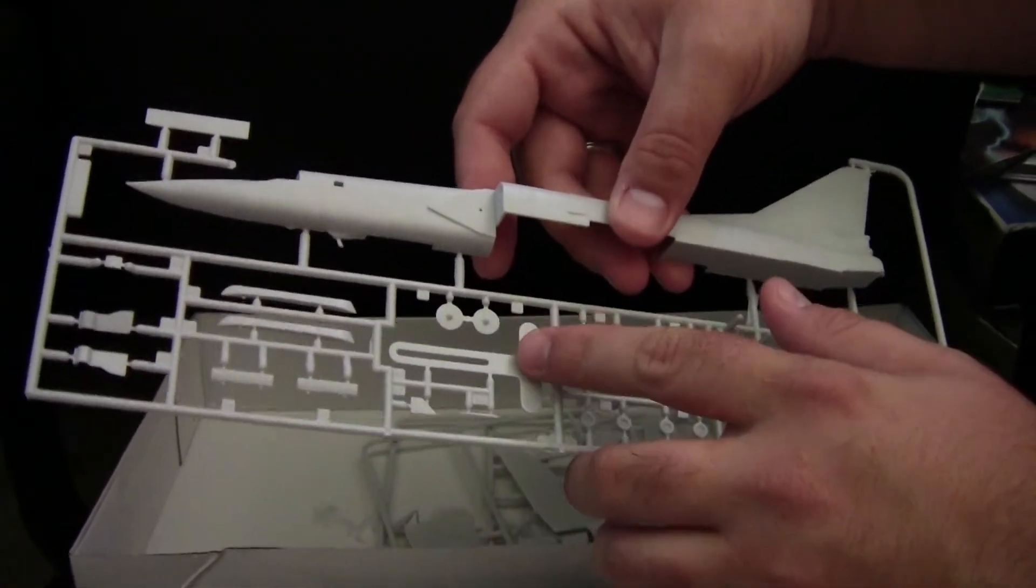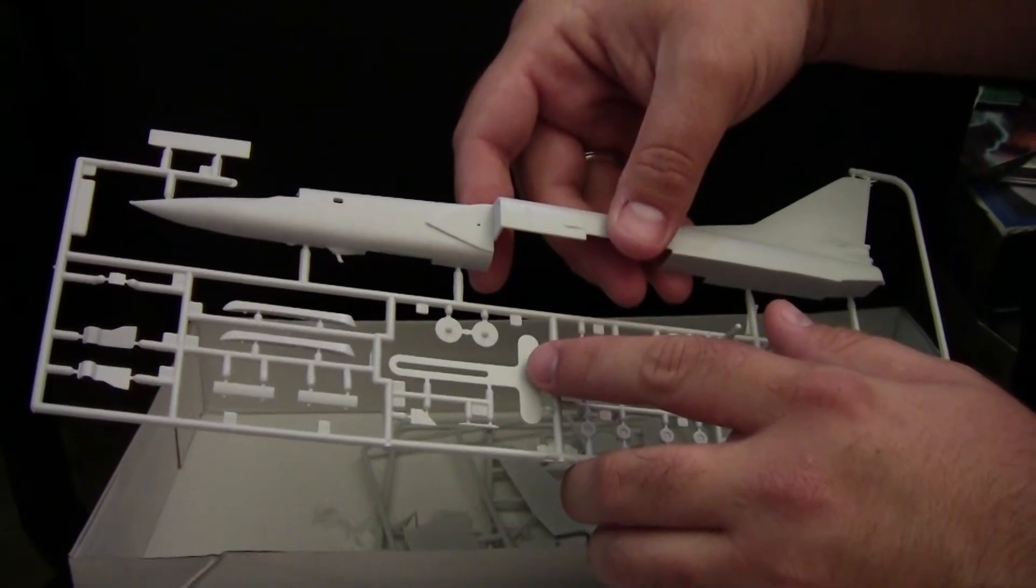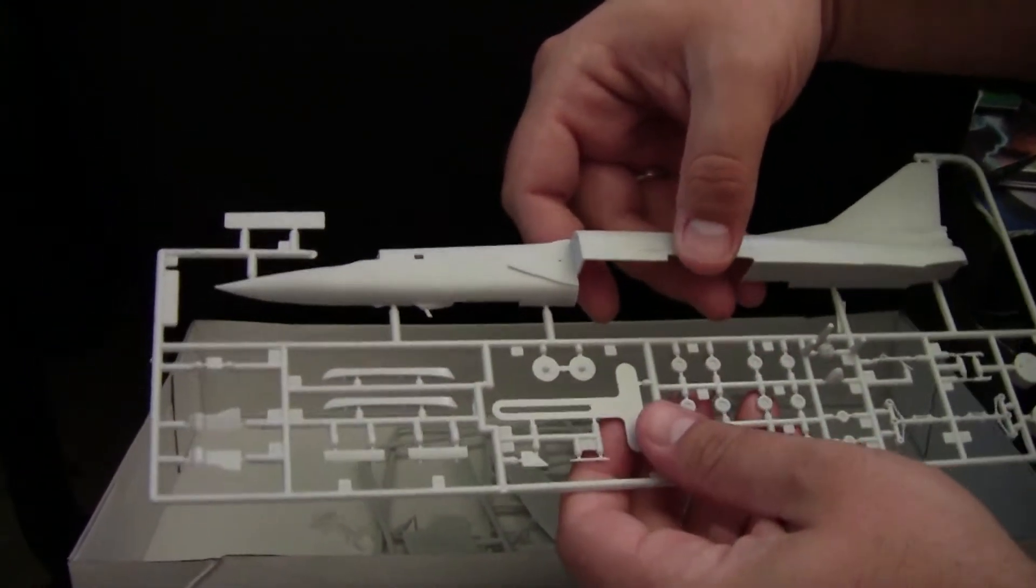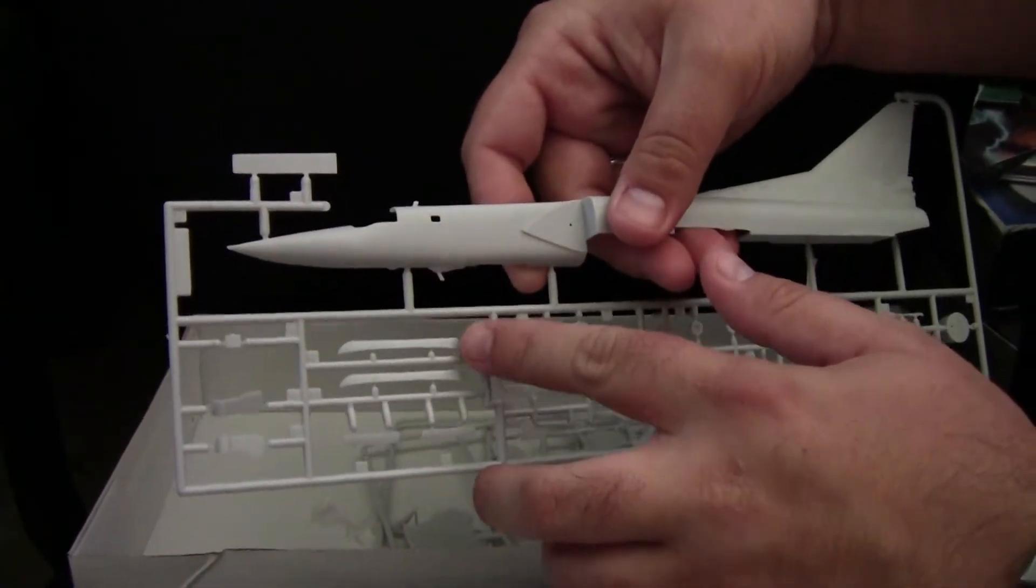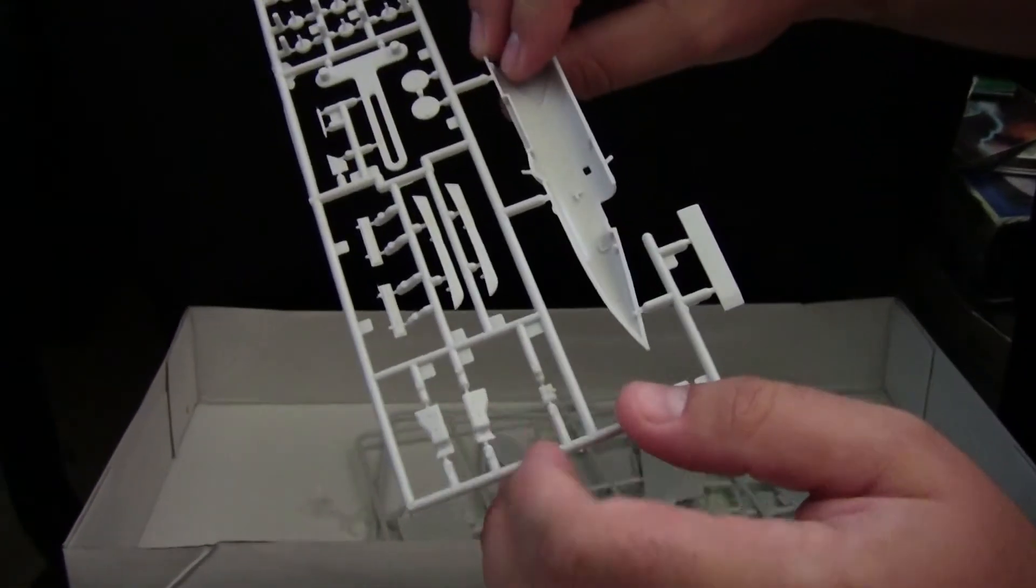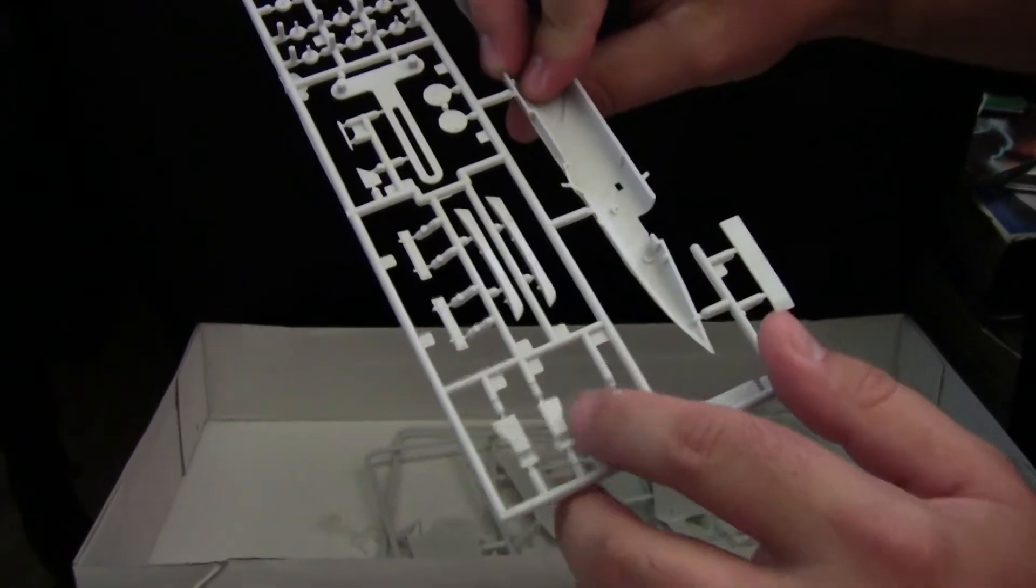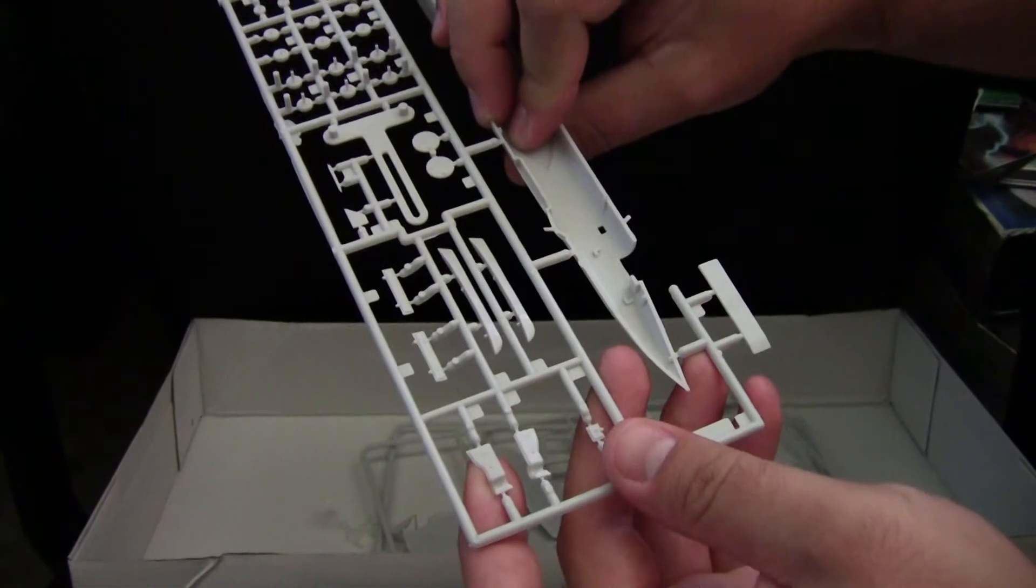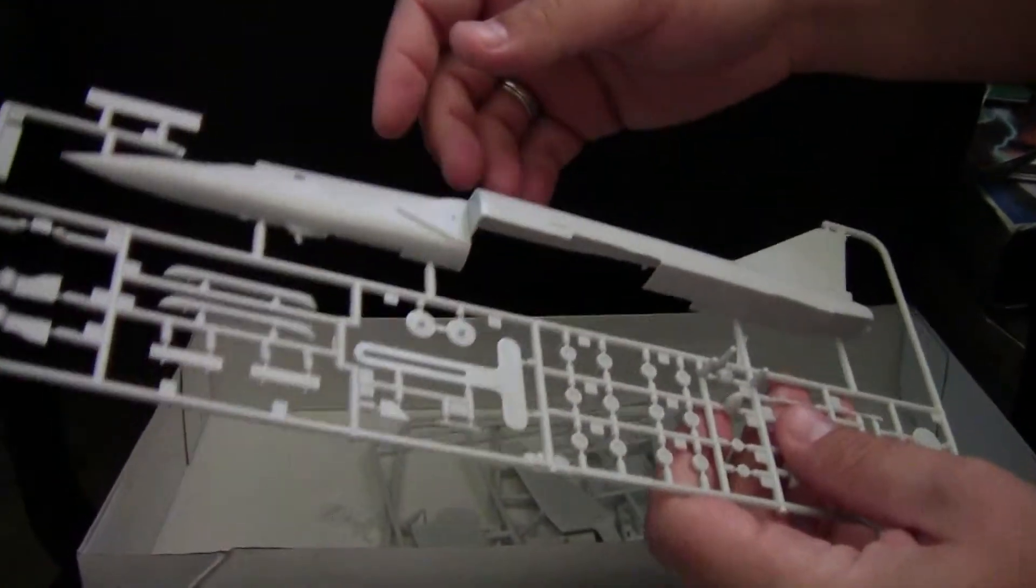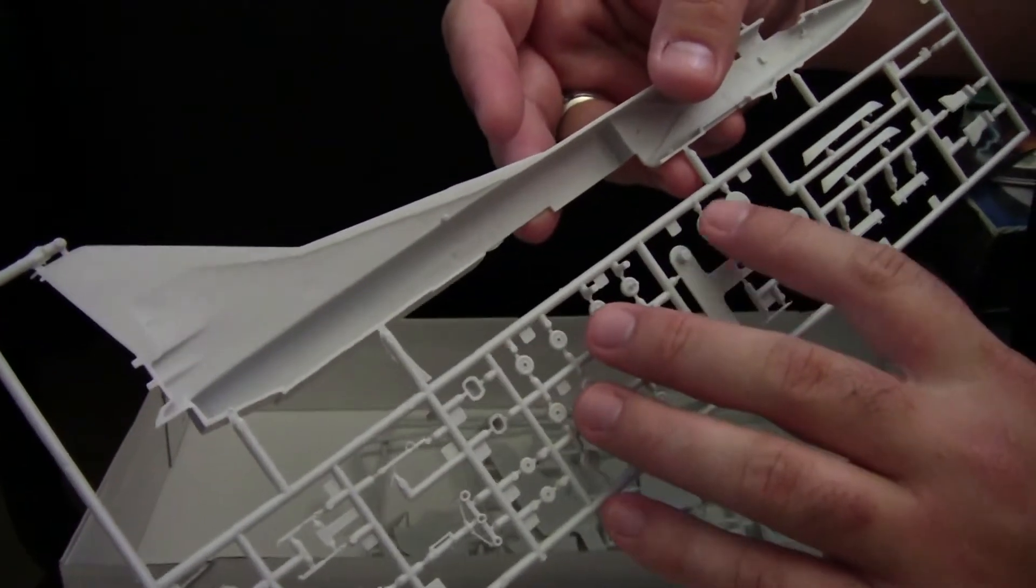We also have the little part for working the variable geometry wings, our two weapon pylons, as well as our nose gear doors and main gear doors. Both are lacking in detail as well, again though, for the scale, I think it can be forgiven a little.